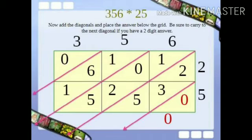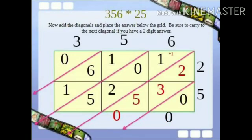Children, you must start adding the numbers from right to left. In the first diagonal there is only one number that is 0. So write the 0 below the grid. Then add the next diagonals. 2 plus 3 plus 5. So the answer is 10. So write 0 below the grid. And 1 will be the carry over.